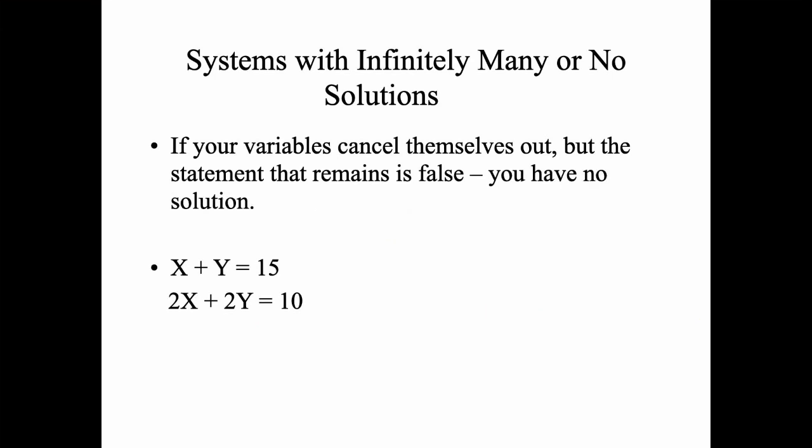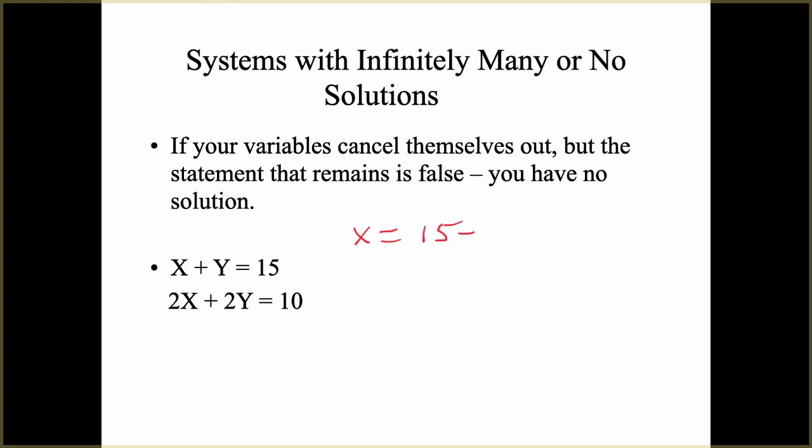If your variables cancel themselves out, but the statement that remains is false, you have no solution. So this one, I'm going to solve for X. X is 15 minus Y. So then we have 2 times 15 minus Y plus 2Y equals 10. And when you solve this, you distribute the 2 completely. And we get the negative 2Y plus 2Y cancels out, going to 0 and we get 30 equals 10. That's a false statement. That means there is no solution. And what would happen is if you graph these, these are parallel lines. That's why there is no solution. They will never cross.